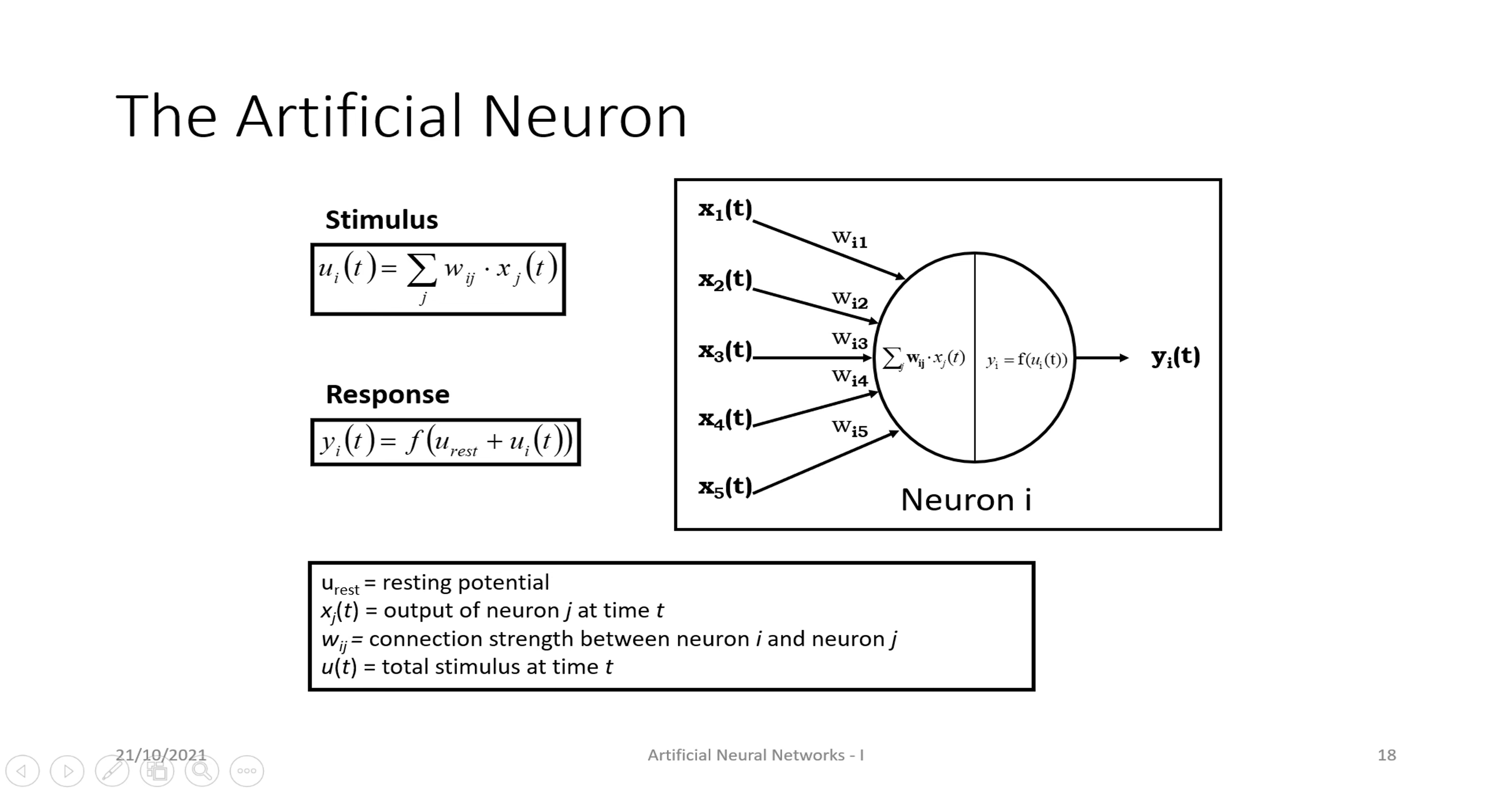The stimulus, the input stimuli we were talking about, produces a response. It's like a chemical reaction - these are neurochemicals, neurochemical impulses inside the brain which are reacting. That reaction is being mathematically replicated artificially to create an artificial neuron. There are different factors: resting potential, the output of a neuron at time point x times t, and it depends upon the connection and the total stimulus at a certain point.